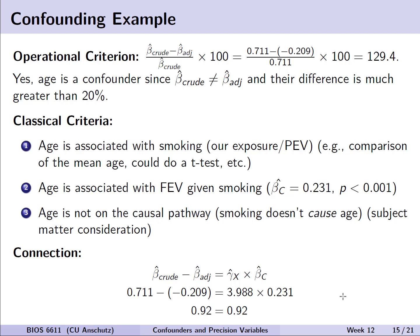Let's first look at the operational criterion from the biostatistics perspective. We pull beta hat crude and beta hat adjusted from the previous slide and plug them into our equation. The resulting value is quite large — far above 20%, and even above a more liberal threshold of 50%. So age does appear to be a confounder, since beta hat crude and beta hat adjusted are not equivalent and their difference is much greater than 20%.